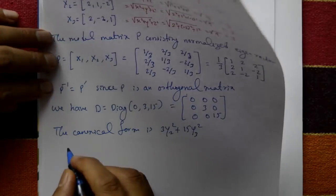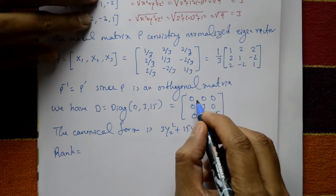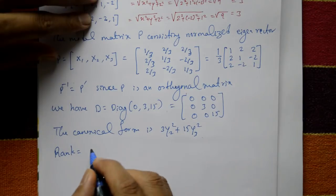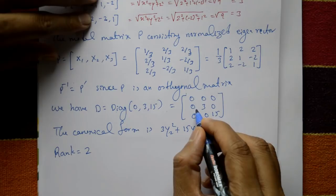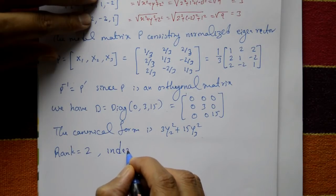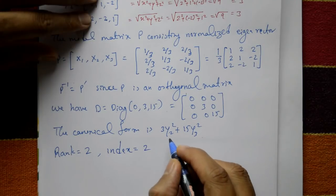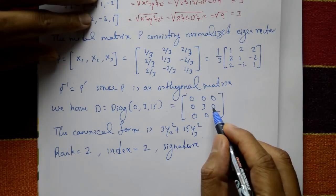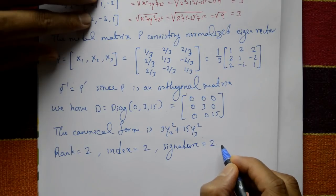Now find the rank, index, signature, and nature. Rank: count the number of non-zero rows in D. The first row is zero, so we don't count it. There are 2 non-zero rows, so rank = 2. Index: count the positive terms — there are 2 positive terms, so index = 2. Signature: difference between positive and negative terms. There are no negative terms, so signature = 2.